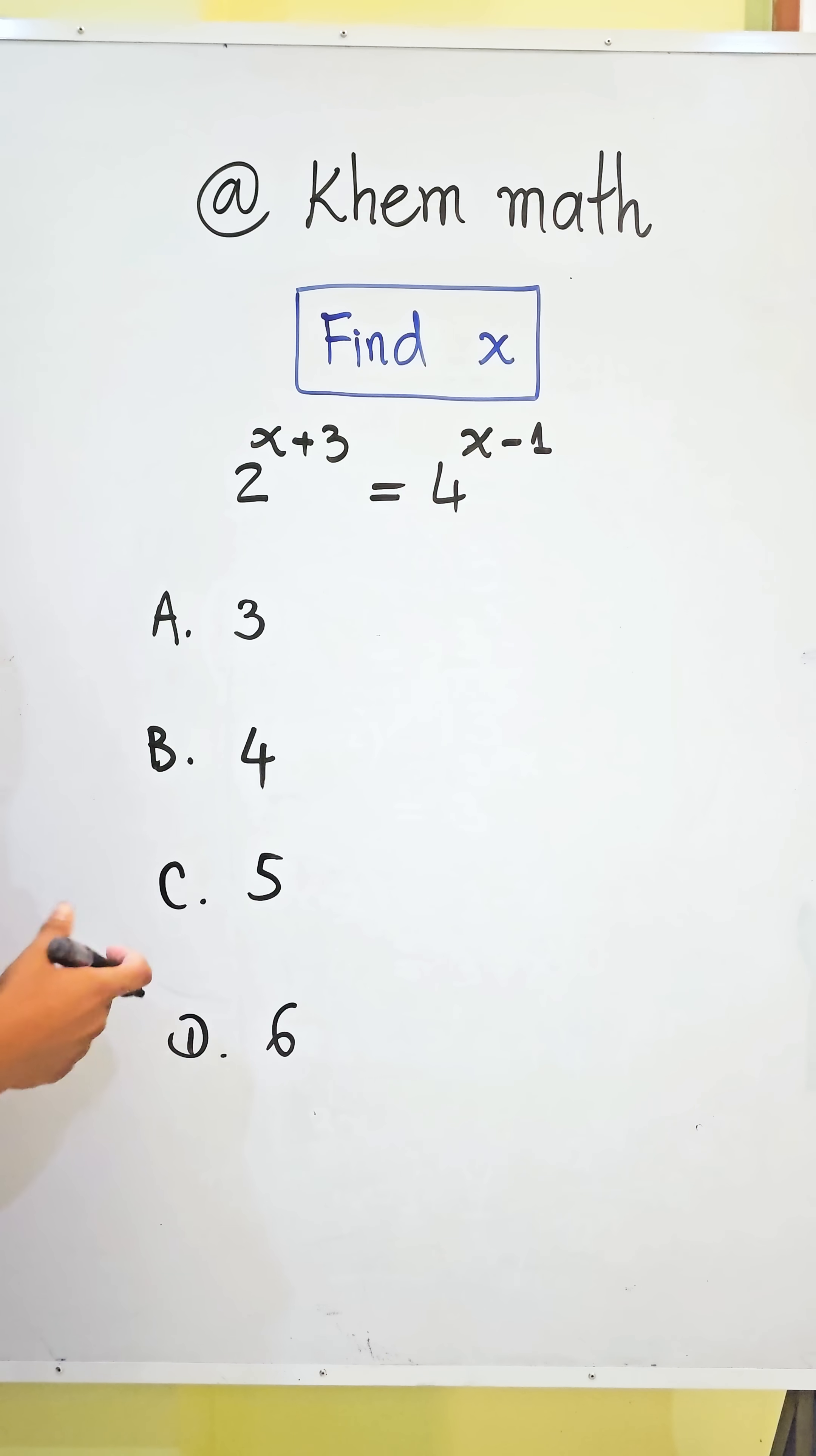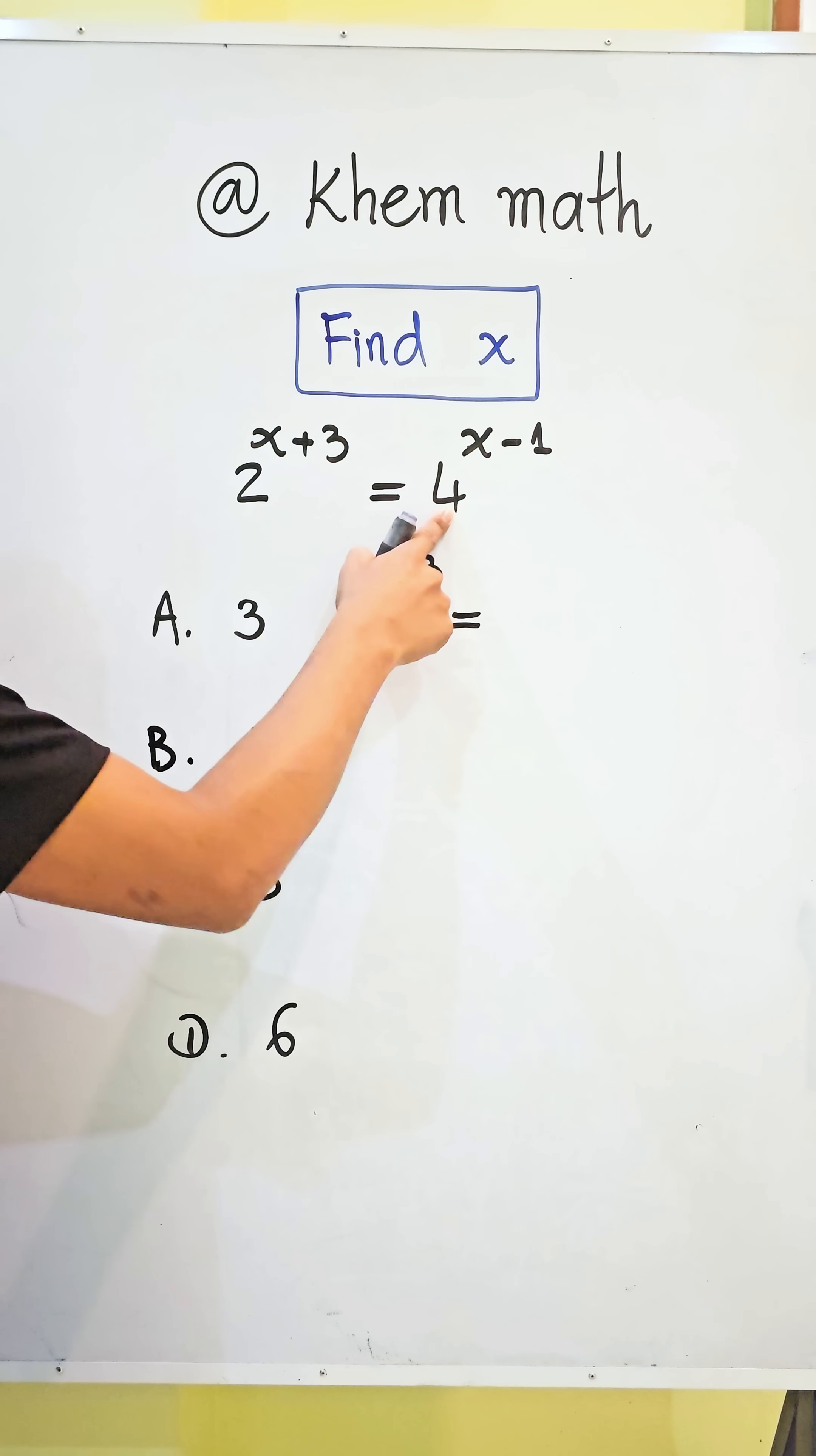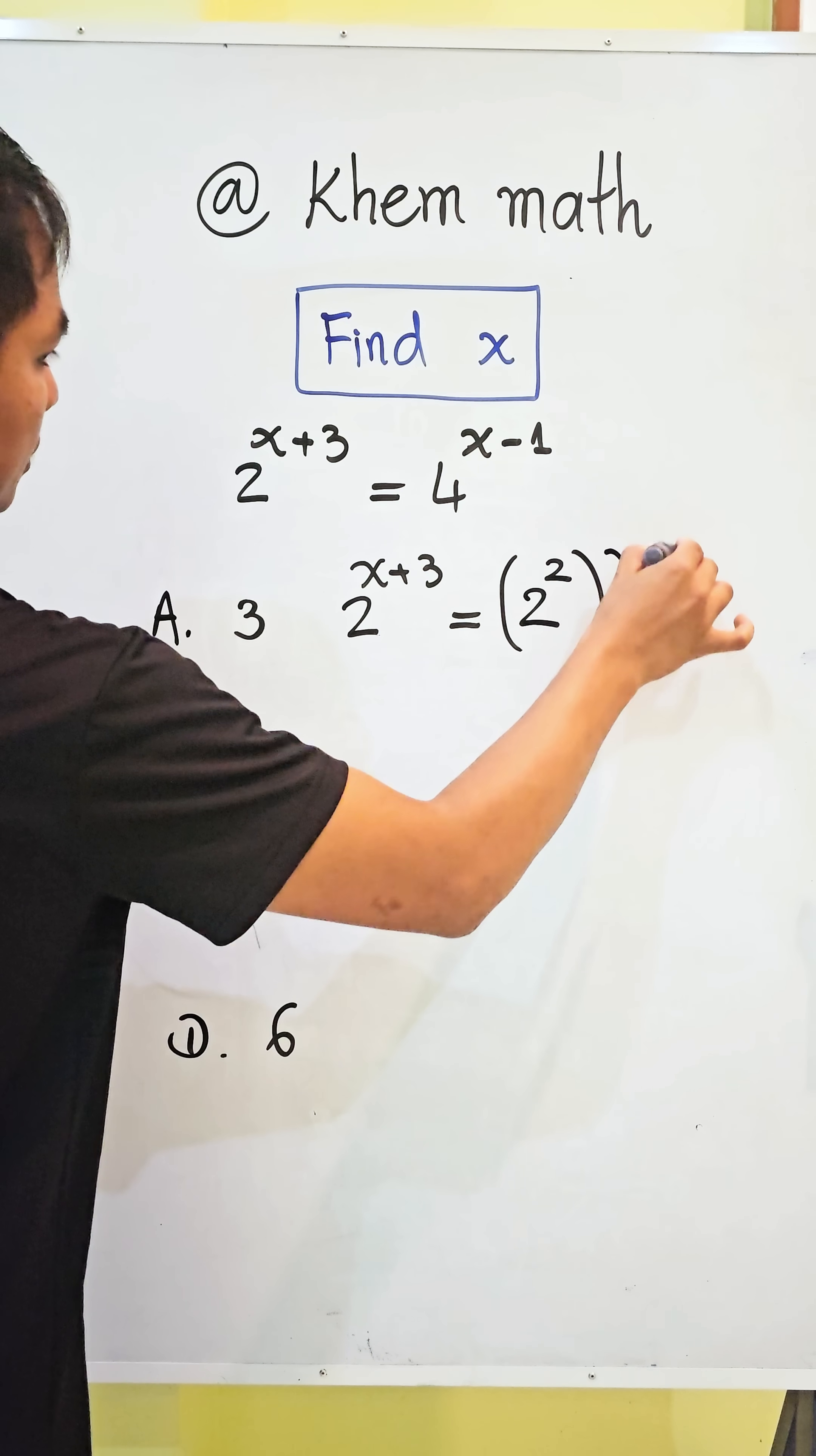So first, we see here 2 power x plus 3, so we must write 4 in base 2. So we get 2 power x plus 3 equal, 4 can be written as 2 squared. So we get 2 squared all power x minus 1.